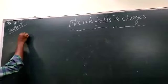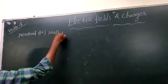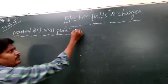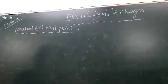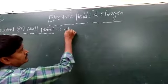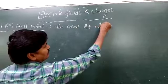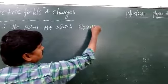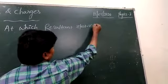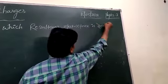Neutral Point, or Null Point, is nothing but the point at which the resultant electric field force is zero. So it is called as Neutral Point or Null Point — the point at which the resultant electric force is zero.